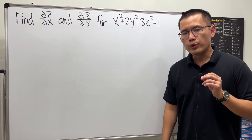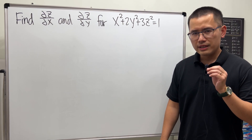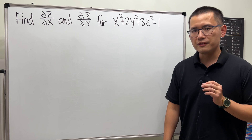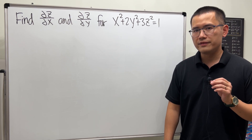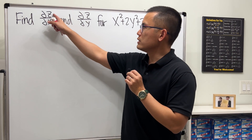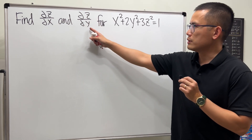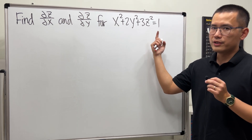In this Calculus 3 tutorial, we are going to see how to do the Calculus 3 version of implicit differentiation to find the derivative we want. We want the partial z with respect to x and also with respect to y for this equation.